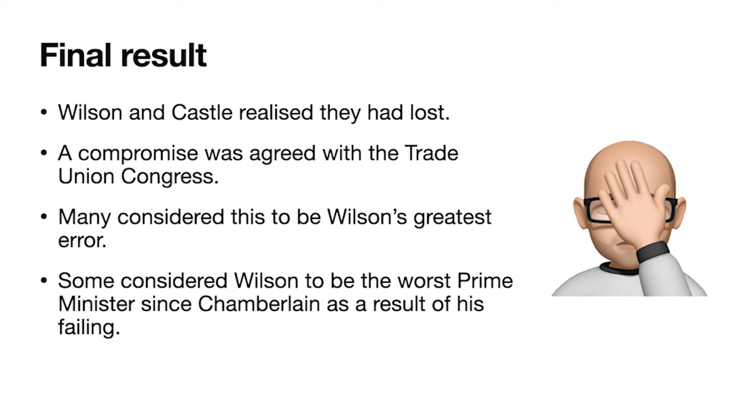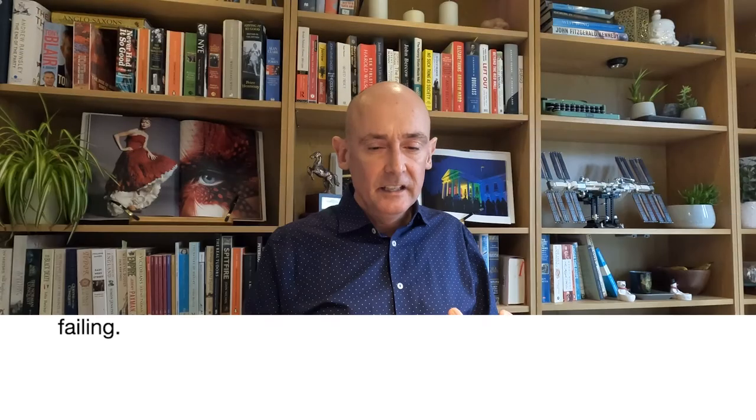Wilson and Castle realise that they have lost the argument — they are not going to get any legislation across the line, so they must find a compromise. The compromise is agreed with the Trade Union Congress and is described as a 'toothless tiger': a set of intentions but nothing that really demands certain people must do certain things. The unions still have all the power they had before. Wilson has really failed to control the unions. Many historians consider this to have been his biggest failing during his time in power.